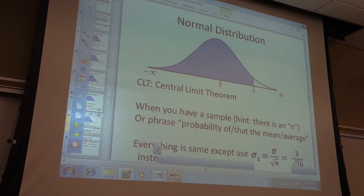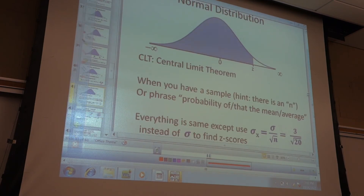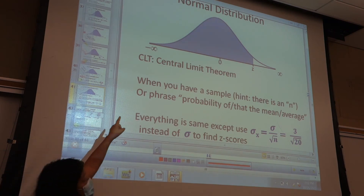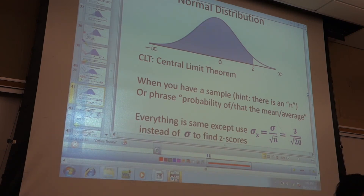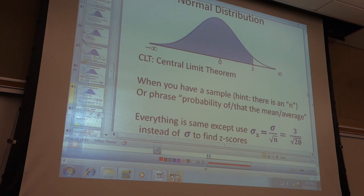There's a special case of the normal distribution: the central limit theorem. When you have a sample, you'll have an n — a sample size — and the phrase 'probability of the mean' or 'probability of the average.' Everything else is the same as before. The only difference is you use σ_x̄ = σ / √n instead of σ when finding z-scores.